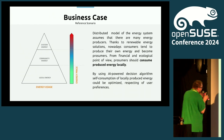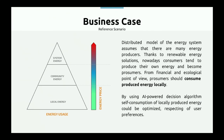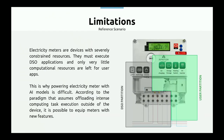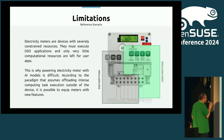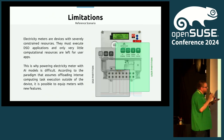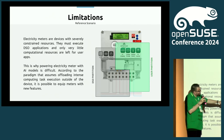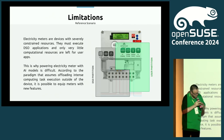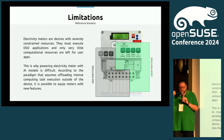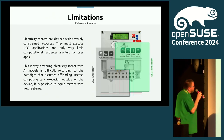The core idea is to use as much local energy as possible given the user's requirements, because the more you rely on community or grid energy, the more expensive it gets. Users set their preferences — like when they want their home heated, or when to charge their electric vehicle — through a web interface at the energy vendor.